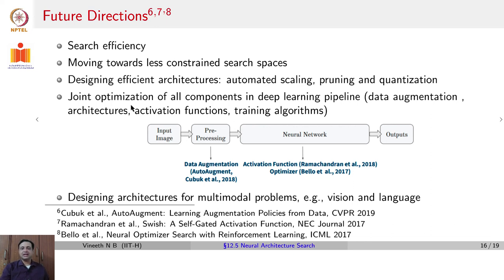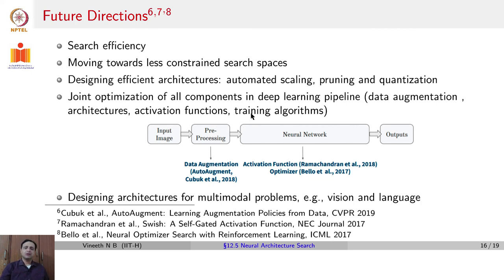Another important direction is a joint optimization of all components of a deep learning pipeline, not just the architecture. We could also consider what data augmentation to use, what activation functions to use, what optimizers to use, and so on. Including all of that in the NAS search pipeline would be an interesting future task. Finally, designing architectures for multimodal tasks, such as vision-language tasks, could also be a very important and useful direction.